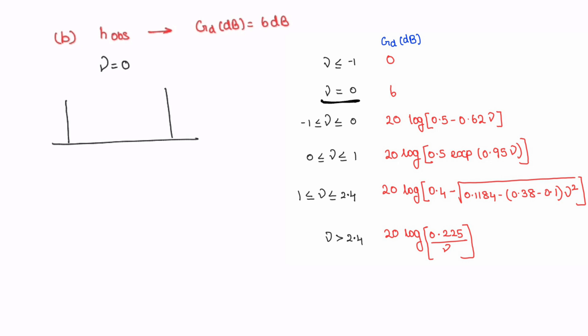We assume transmitter and receiver are at equal height. When V equals zero, the signal from the transmitter just grazes the edge of the obstacle and reaches the receiver. So we need to find the obstacle height at which this grazing condition is met, i.e., V equals 0.